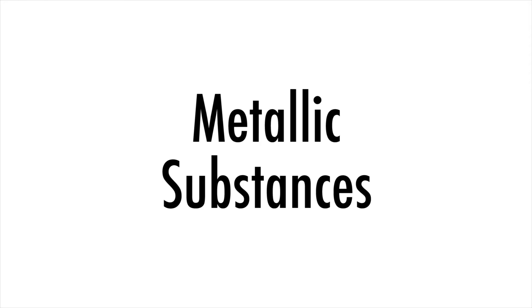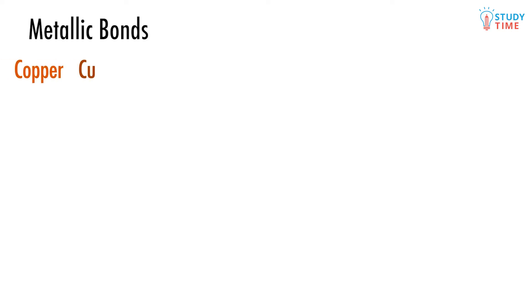So now you know about the bonding and properties of two different kinds of solid, what about the other two? We now come to the third kind of bonds, which are the ones we find in ordinary metals. We're going to use good old copper, Cu, as our example in this section.